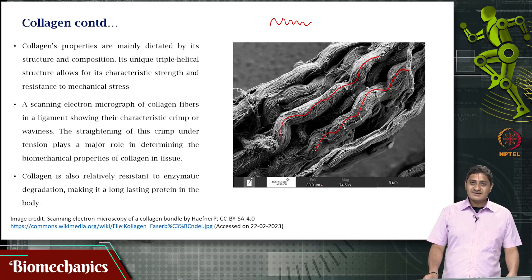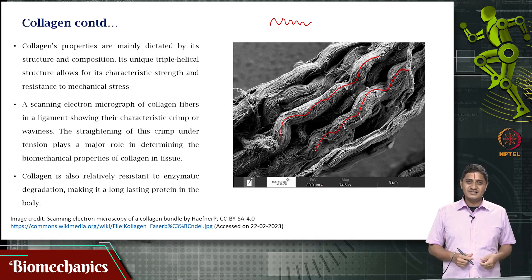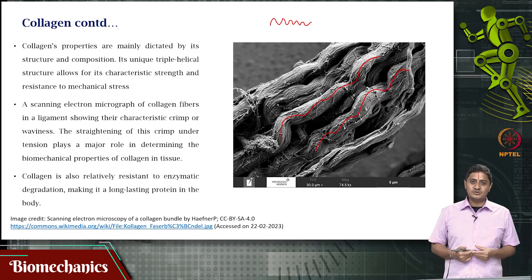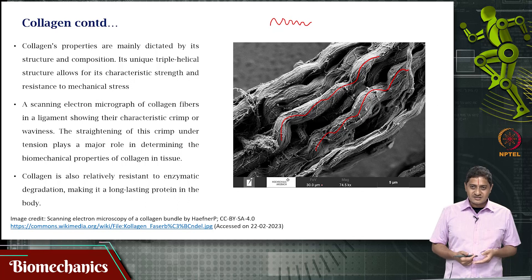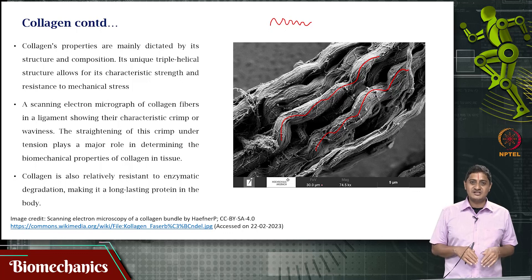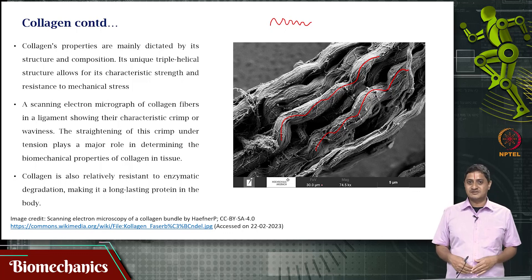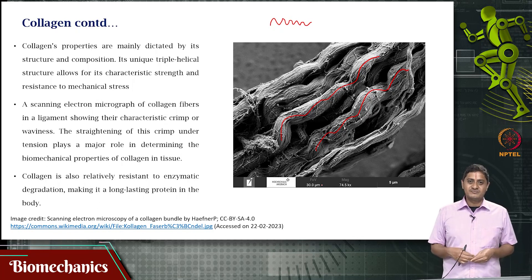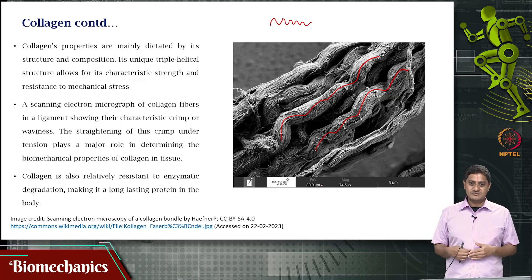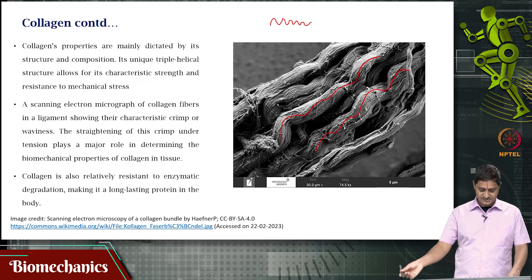The straightening of this waviness or crimp under stress plays a crucial role in the biomechanics and mechanical properties of the tissue in which collagen is present. Collagen is present in many different tissues — in tendons, in ligaments, in cartilage, and practically everywhere — because it is one of the most abundant proteins.